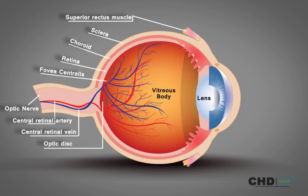The optic disc is also known as the blind spot. This is where all of the axons of the ganglion cells exit the retina to form the optic nerve.